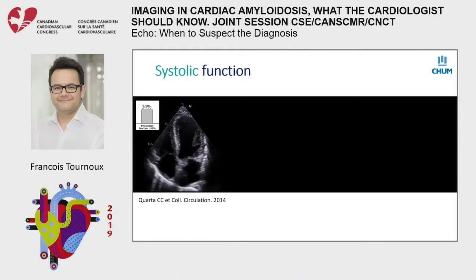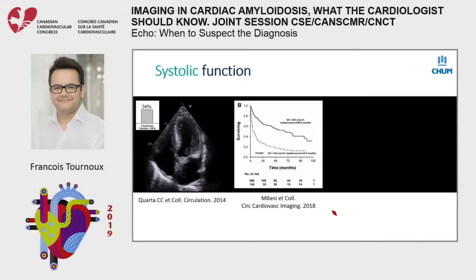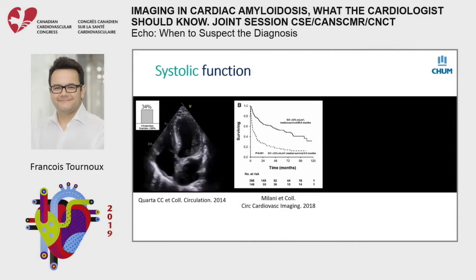Left ventricular ejection fraction is usually preserved, but about one third of patients can have significant LV dysfunction. Preserved LV function does not equal preserved stroke volume. Because of strong concentric cardiac remodeling, the cavity becomes smaller, so stroke volume is small. This has prognostic value — the lower the stroke volume, the worse the prognosis.